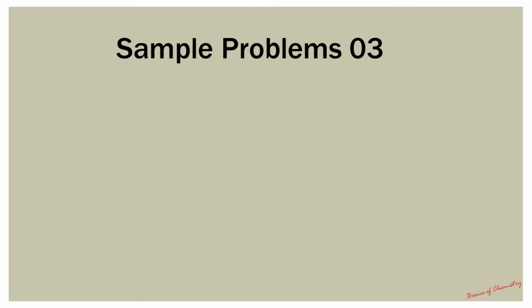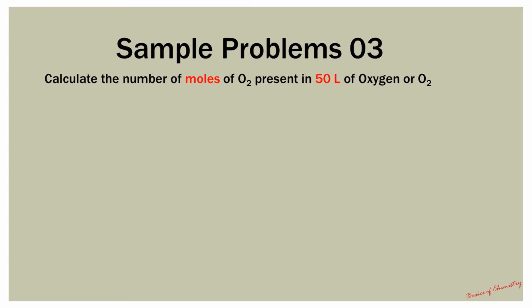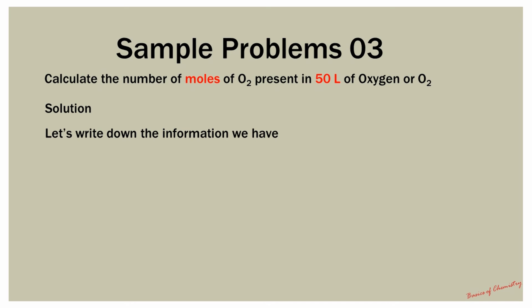Sample Problem 3: This is a problem involving volumes. We will use the molar volume, or grammolar volume, at STP to determine the moles of gaseous compounds. Calculate the number of moles of diatomic oxygen present in 50 liters of diatomic oxygen molecules. First, write down the data that is provided to you, then write the equation based on the data provided. Volume of diatomic oxygen is equal to 50 liters.